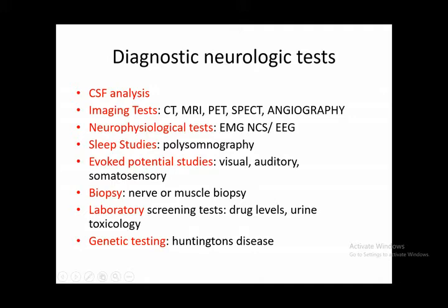Biopsy, like nerve biopsy and muscle biopsy, is also routinely performed for diagnostic purposes. Laboratory tests include screening tests for drug levels, urine toxicology, and genetic testing — for example in Huntington's disease and many dystonia disorders — though genetic tests are not so common in other parts of the world. Routine tests like blood CBC, urea, creatinine, and electrolytes are also very important.